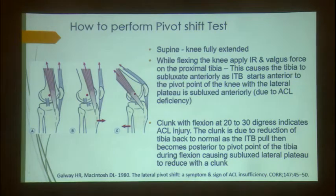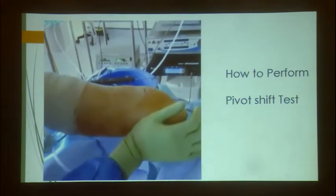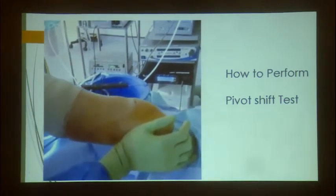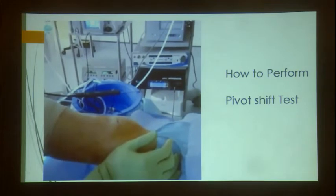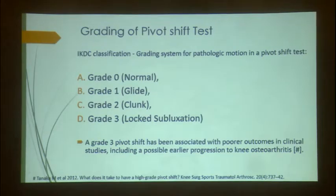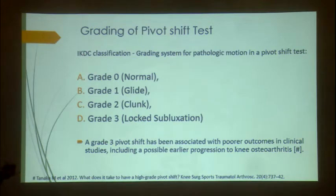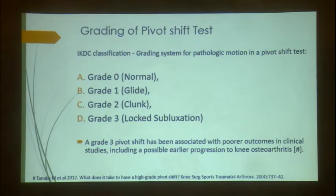Here is the left knee demonstration under anesthesia — foot end on the left, valgus and internal rotation applied. You can see the clunk as it reduces. It is subluxed, flexed, and reduces back. It is important not just to call a test positive or negative but to grade it. The IKDC classification: grade 0 is normal; grade 1 is a slight glide; grade 2 is a clunk; grade 3 is a clunk where it locks unless forced back. Grade 2 and 3 are clinically significant, indicating a major rotational component that must be addressed.